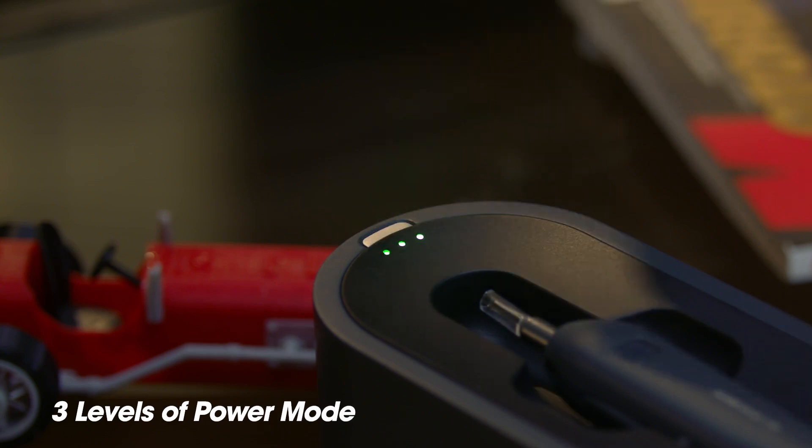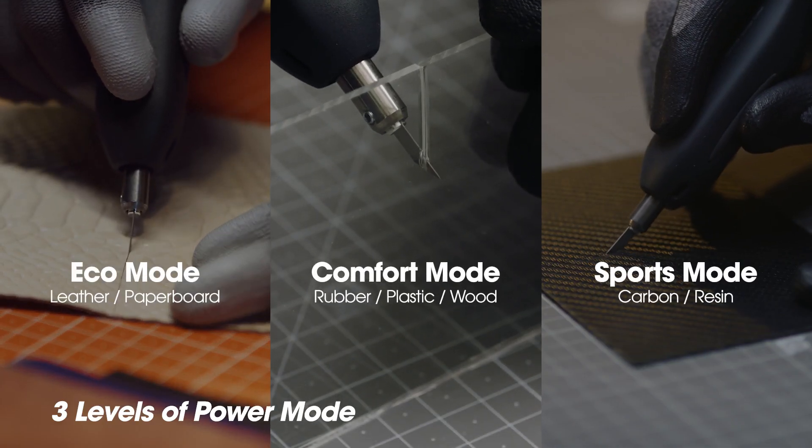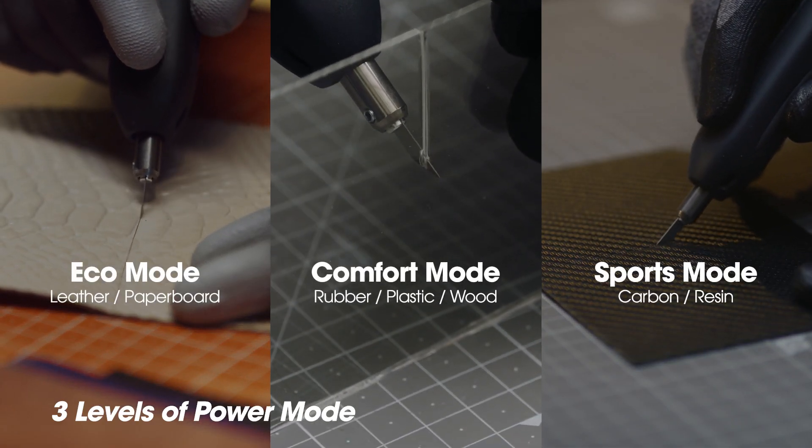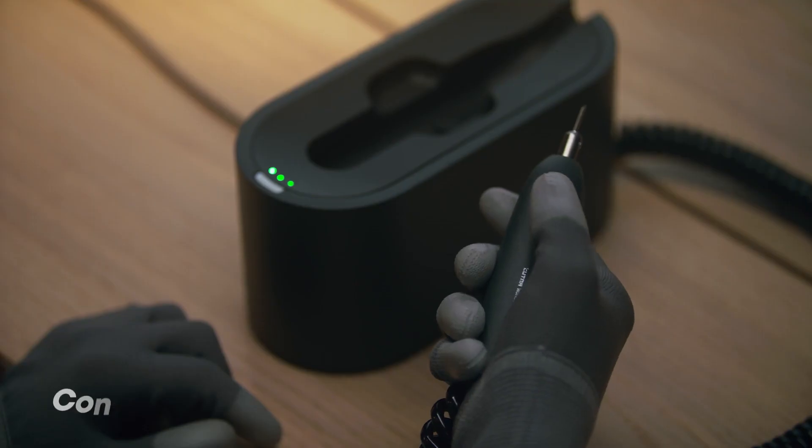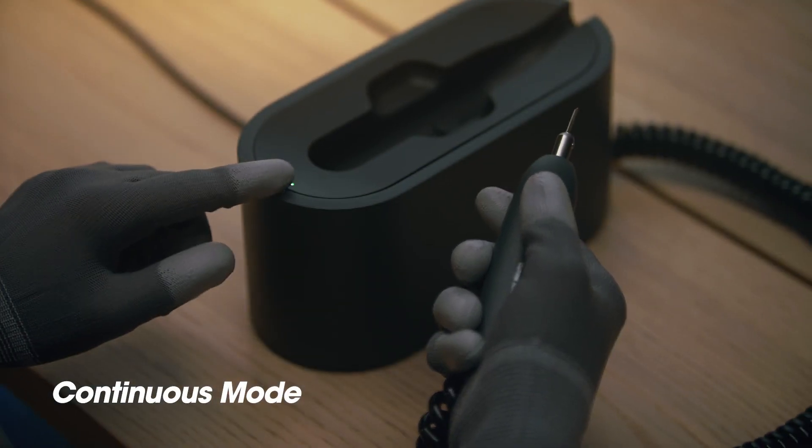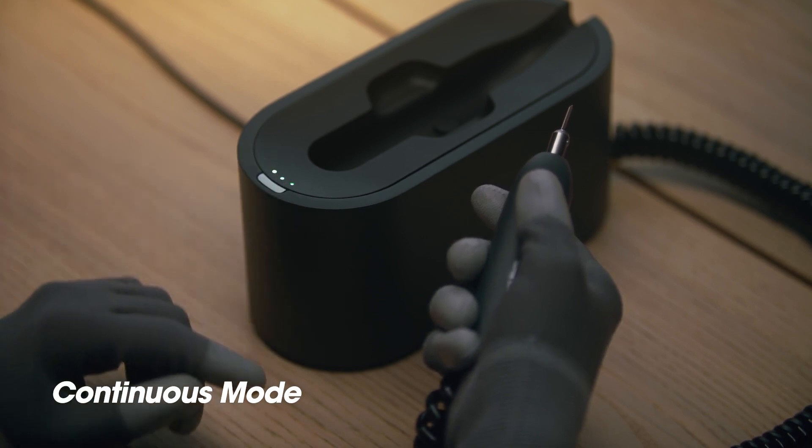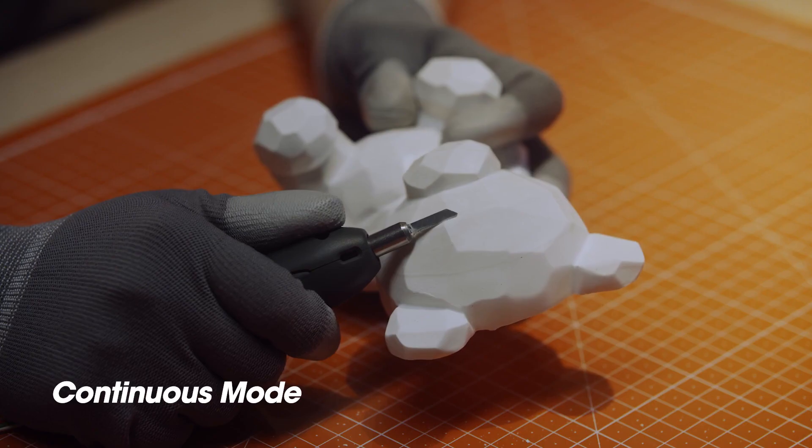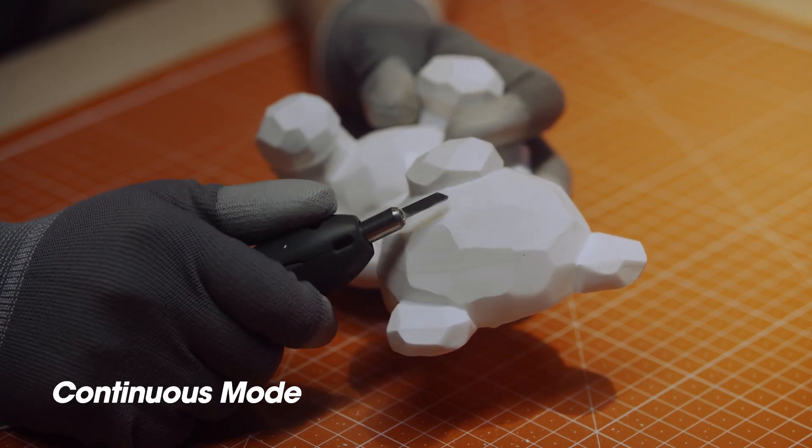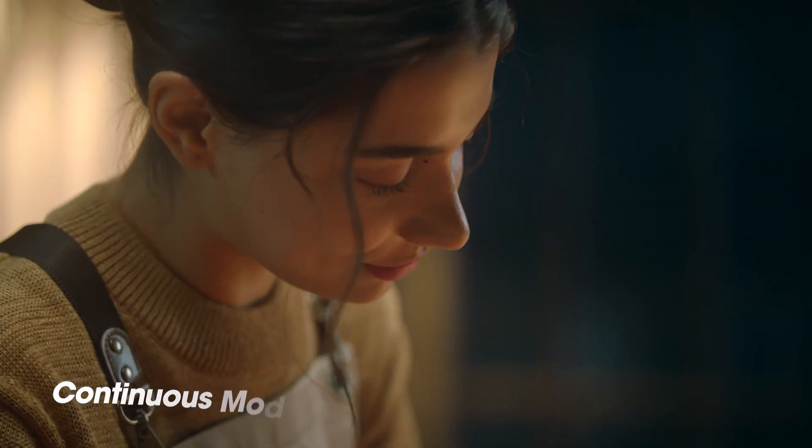With three levels of power modes, you can cut material using the best level of force. The continuous mode allows you to use it comfortably for extended periods of time. And best of all, it will continue to operate even without pressing the button.